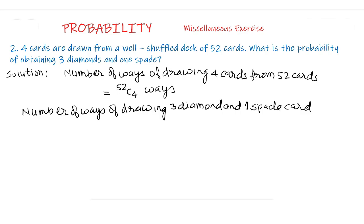Number of ways of drawing three diamonds and one spade card. There are 13 diamond cards as well as 13 spade cards in 52 cards.